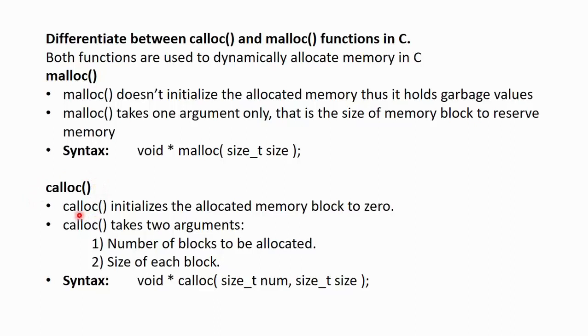Calloc initializes the allocated memory block to 0. So, the memory that is initialized by Calloc will hold the value 0 and not the garbage values. It takes two arguments. One is the number of the blocks to be allocated and the other is the size of each block.